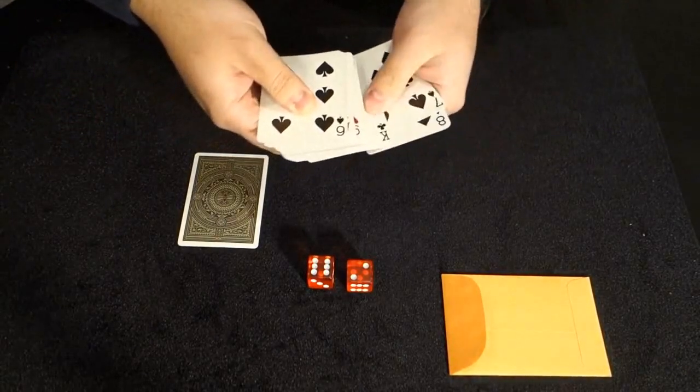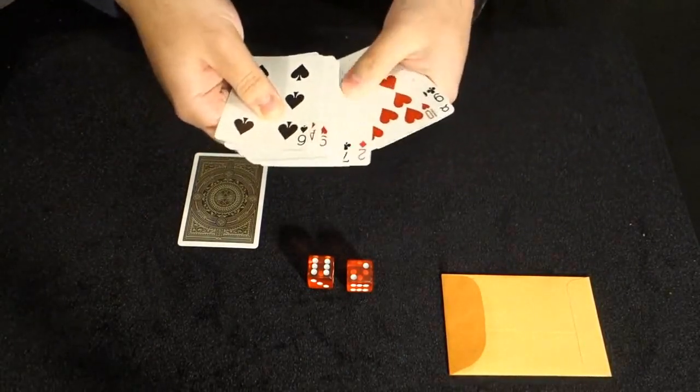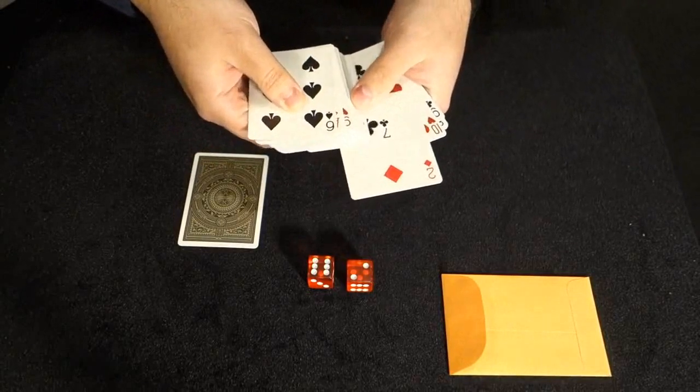So that'd be one, two, three, four, five, six, seven, eight. The two of diamonds.